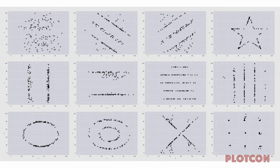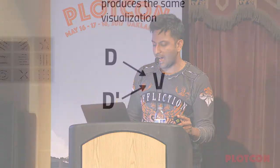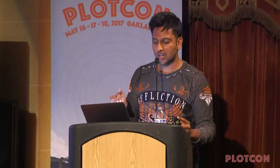Instead of being confused by statistical measures, we can use visualization to see that datasets are all radically different. We should all be alert to the fact that data can be so different but produce the same representation — that's confusion. To fix it, look for losses or gains of dimensionality. In sampling theory we have something called aliasing. Both confusion and hallucination can occur at the human or computer level.